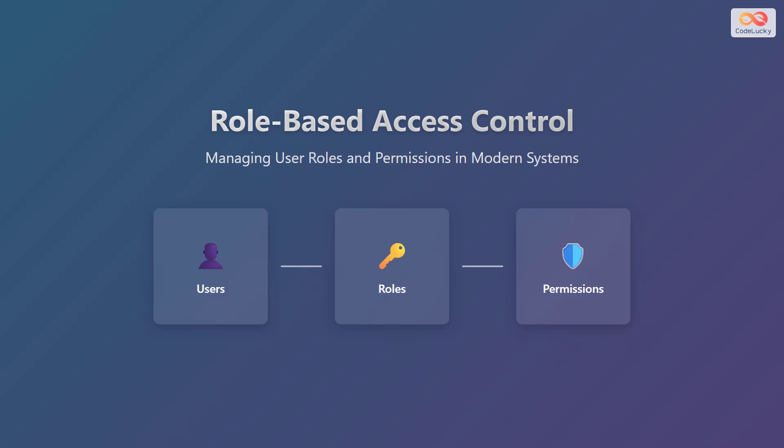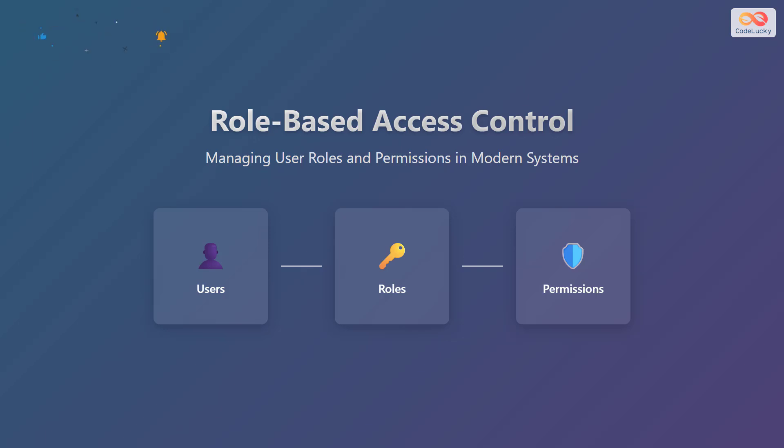Let's explore role-based access control, often called RBAC. It is a method used in modern systems to manage user roles and their related permissions. In an RBAC system, permissions are associated with roles, and users are assigned to these roles based on their job functions. This approach simplifies the management of access rights across many users.